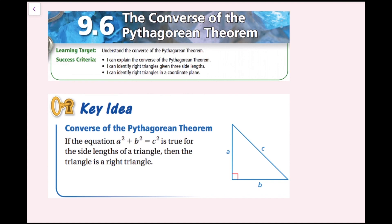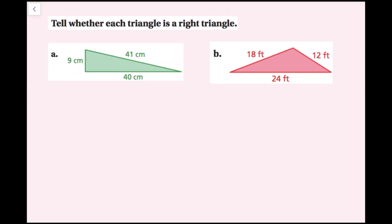Converse of the Pythagorean theorem: if the equation a squared plus b squared equals c squared is true for the side lengths of a triangle — remembering that for a right triangle, a squared plus b squared equals c squared where a and b are the legs and c is the hypotenuse — then we can tell whether each triangle is a right triangle. I'll take the two shorter side lengths, square each one and add them up, and if that equals the square of the longer side length, which would be the hypotenuse, then I know it's a right triangle. If it's not the same, then it's not a right triangle.